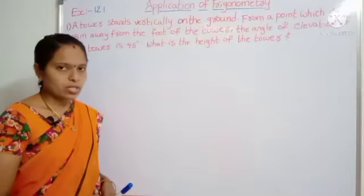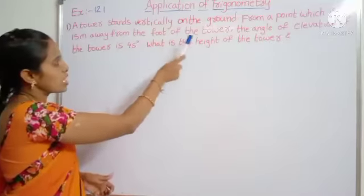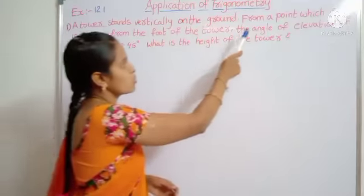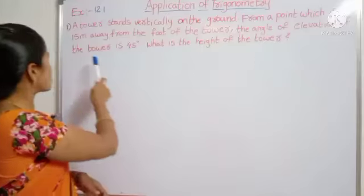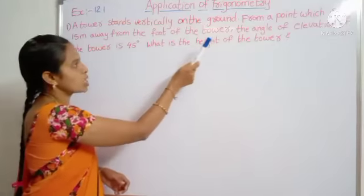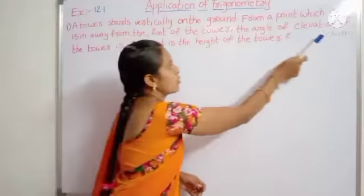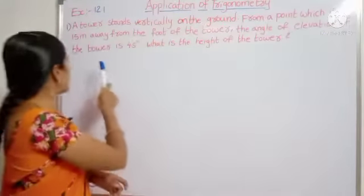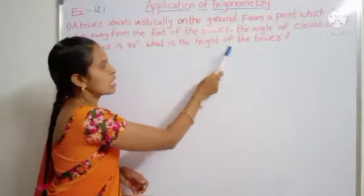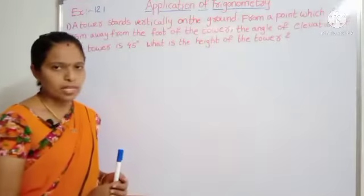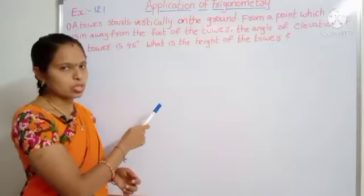See the first question. A tower stands vertically on the ground. From a point which is 50 meters away from the foot of the tower, the angle of elevation of the tower is 45 degrees. What is the height of the tower?